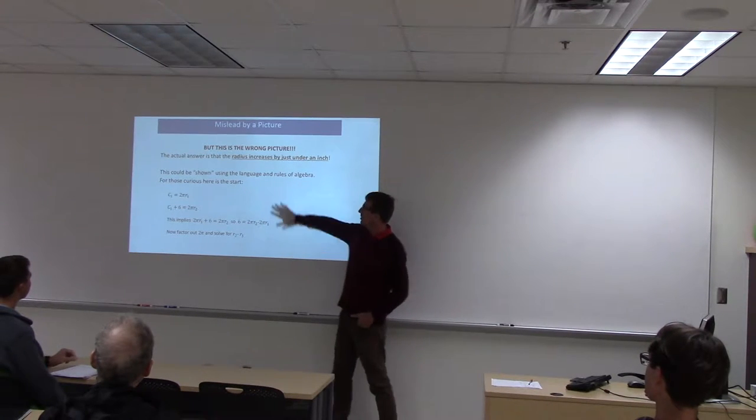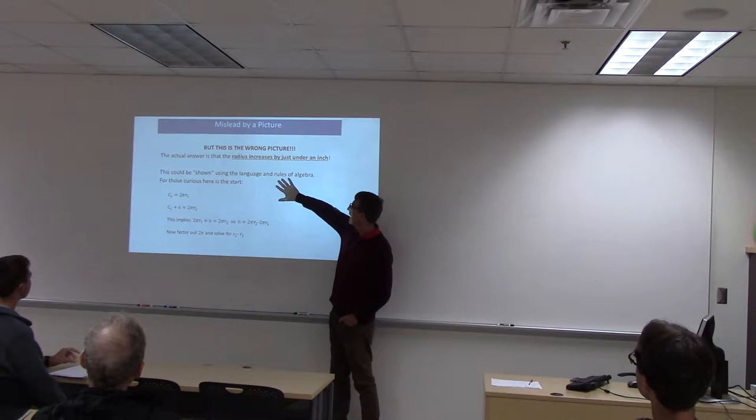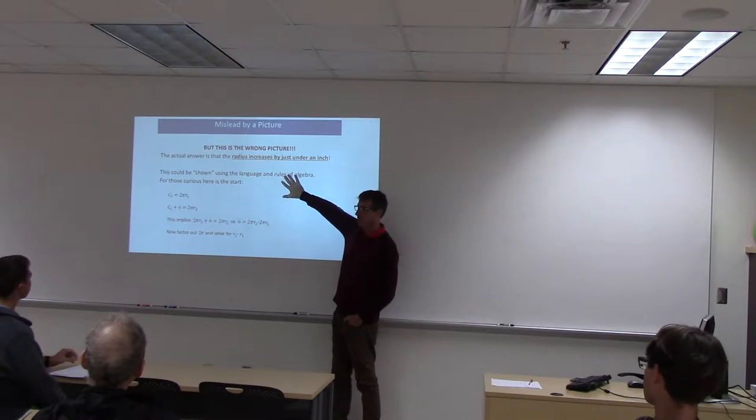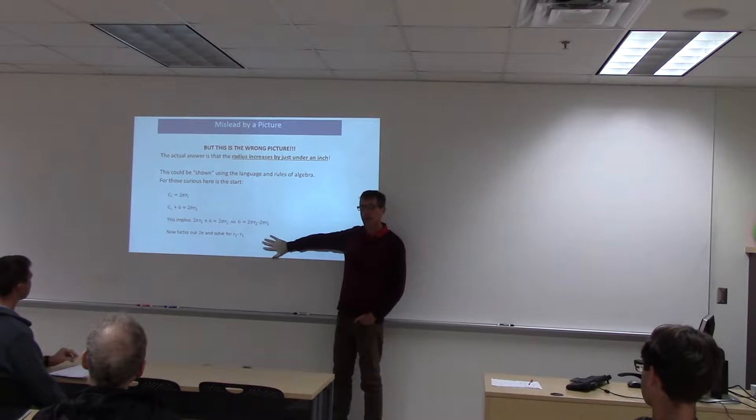The radius increases by just under an inch. So six inches was too much. Not at all or the size of the diameter of an atom was way too little. This can be shown using the language and rules of algebra. And this is just a start. I'm going to use a picture.